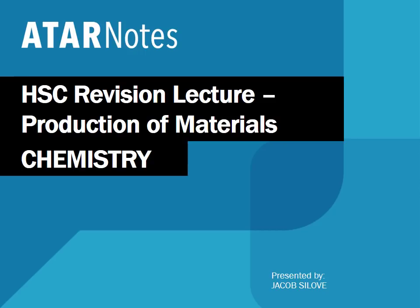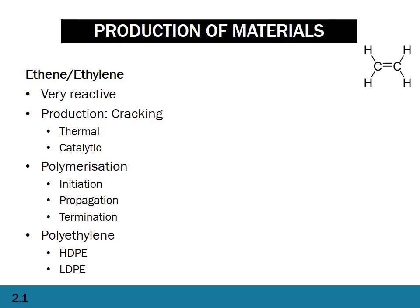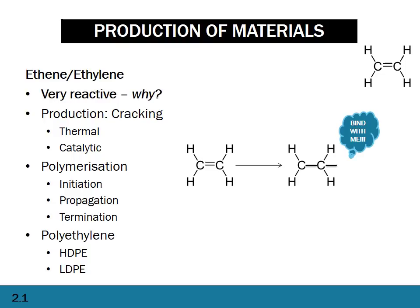So let's get started on production of materials. We start off with ethene and ethylene. I've synthesized it into a list: reactivity, cracking, polymerization, and then polyethylene. Ethene has a double bond between carbons with hydrogens around it. It's very reactive because the double bond can sort of flip out and react with something else — that's why ethene and ethylene are quite reactive.